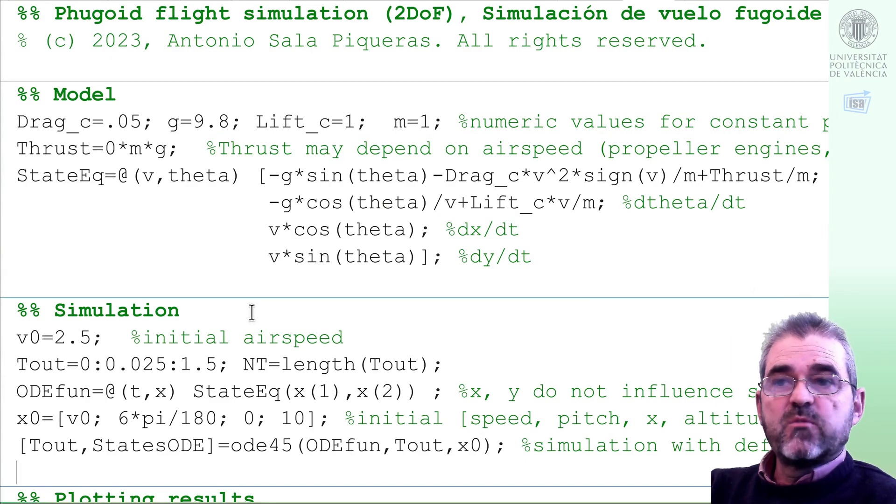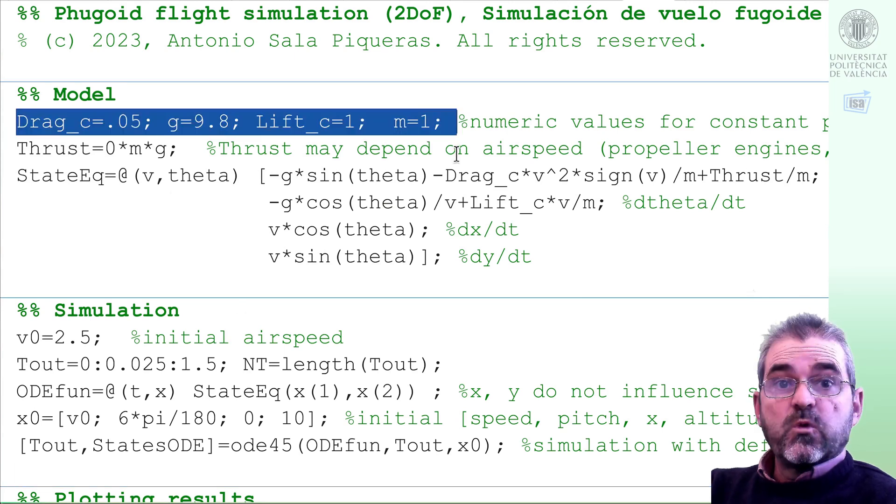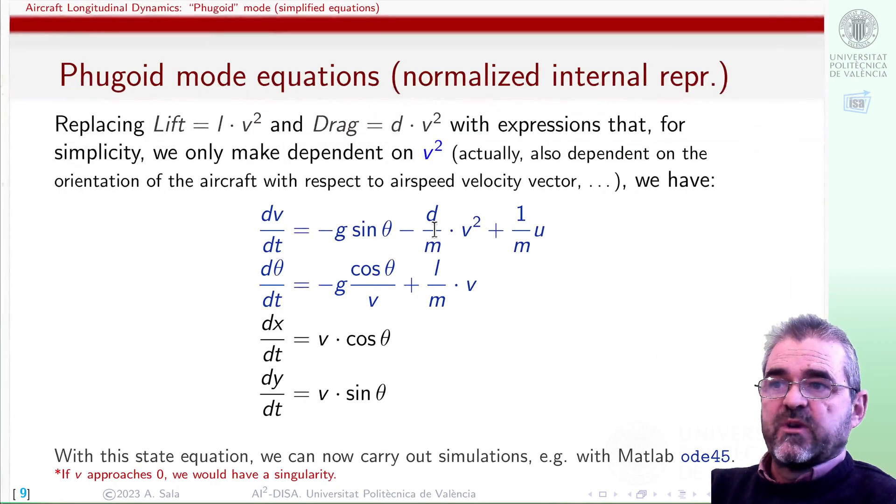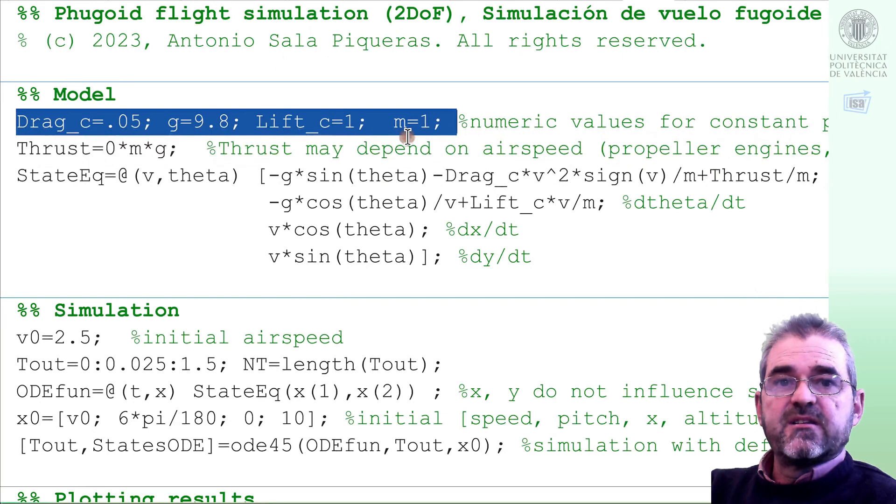How do we insert the model? Well, we will first start by giving numerical values to the constant parameters in the model equations. So we need values for mass, gravity, and lift and drag coefficients. So I invented these ones. This has no relationship whatsoever with any existing commercial aircraft. It's just an invention of mine to be able to compile this code.